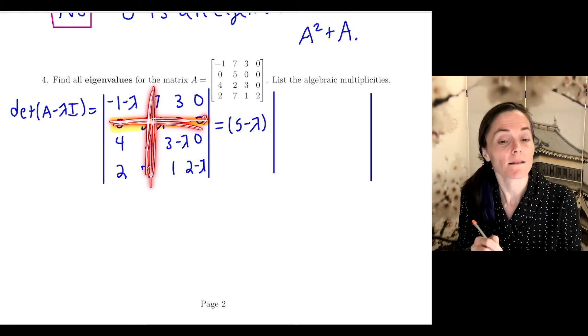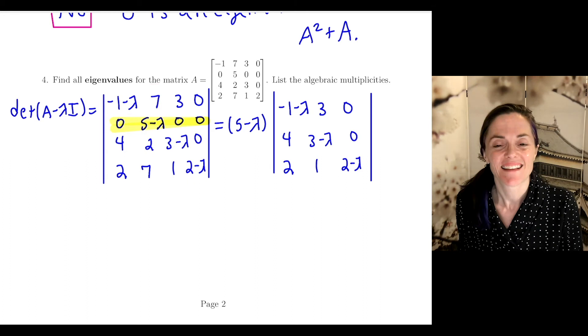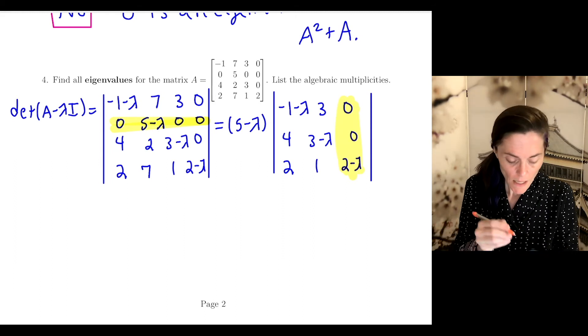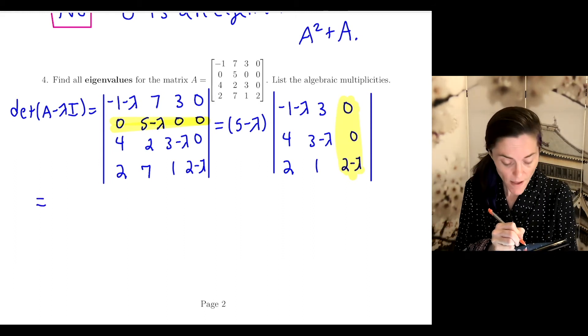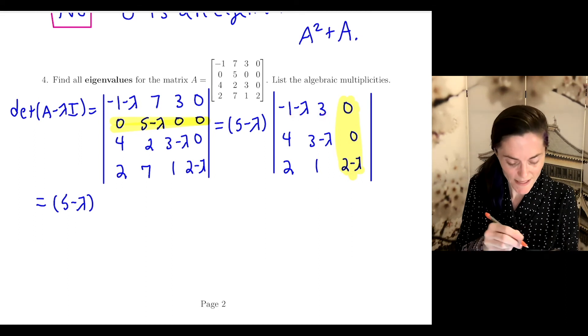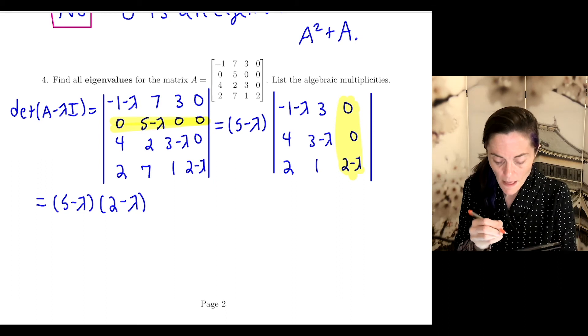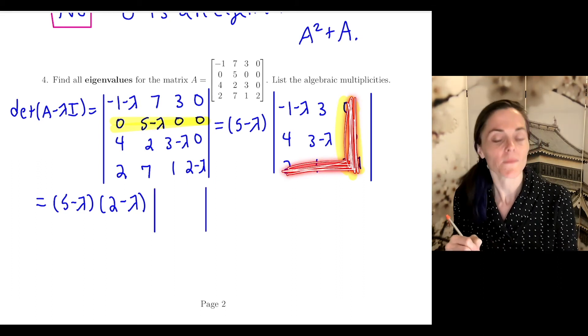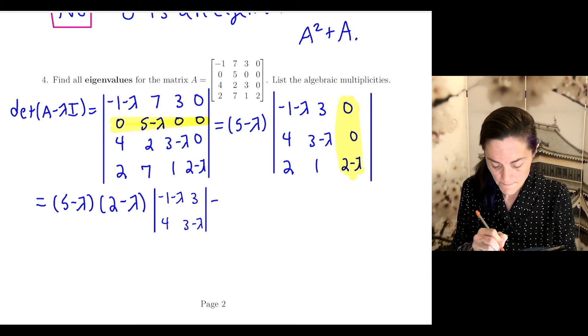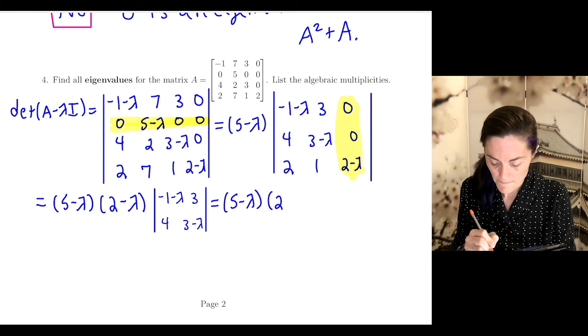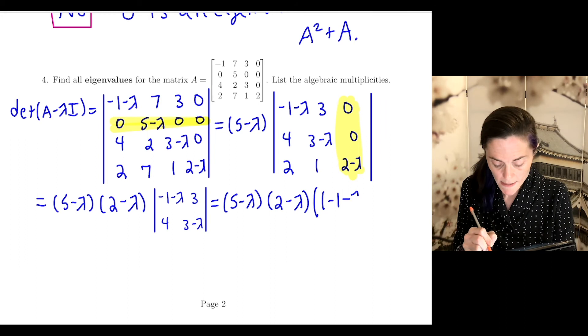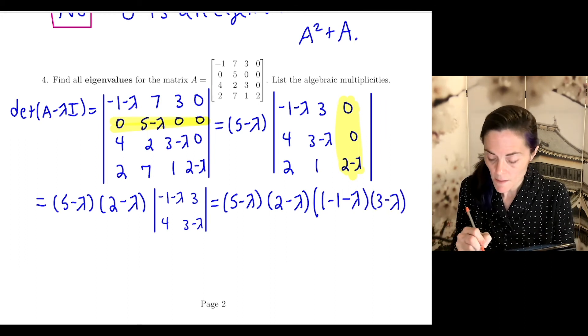We will cross off this column, cross off this row, and this is what we are left with. Now to calculate this 3 by 3 determinant, I will expand this column. We have (5 - λ), and then it's going to be plus minus plus minus plus (2 - λ). We cross off this row, cross off this column, and this is the 2 by 2 that I will calculate the determinant of.